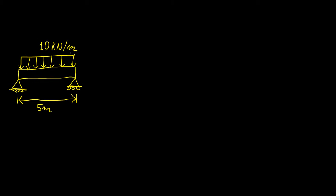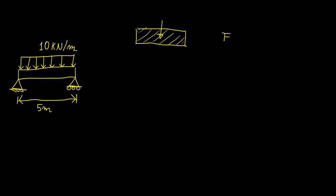In this case it has a distributed load of 10 kilonewtons per meter and we have a beam of total length of 5 meters. When you have a rectangular or uniform load, you have a rectangular area, and the area of that rectangle gives you the magnitude of the resultant force. The resultant force is equivalent to the entire effect of this uniformly distributed load on the beam, and it will always act at the centroid of that area. You can think of this distributed load as a very large block of some mass m — this is like the center of mass.